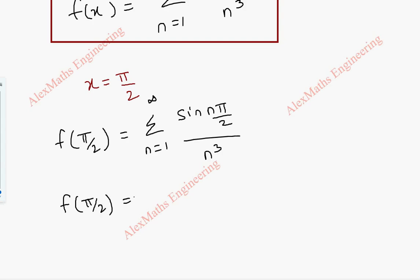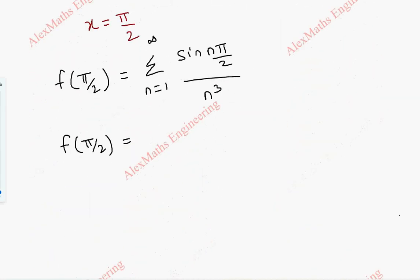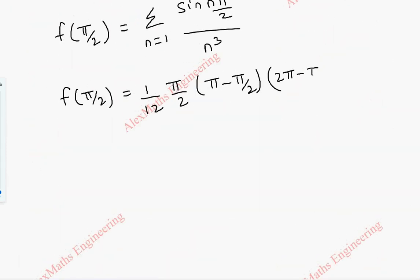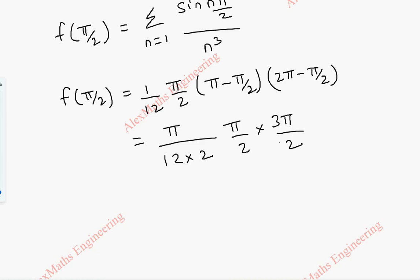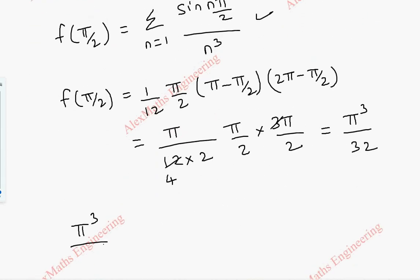Let's find f(π/2) by substituting x = π/2 in the given function: (1/12)·x·(π - x)·(2π - x) = (1/12)·(π/2)·(π - π/2)·(2π - π/2) = (π/12)·(π/2)·(3π/2). Simplifying: π/12 · (π/2) · (3π/2) = π³·3/(12·4) = π³/16. Wait — simplifying correctly: (π/2)·(π/2) = π²/4, times 3π/2 = 3π³/8, times 1/12 = π³·3/(8·12) = π³/32. So f(π/2) = π³/32.